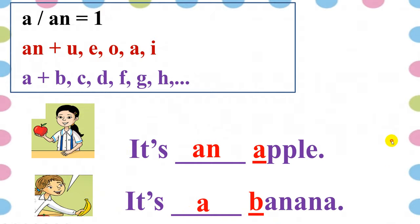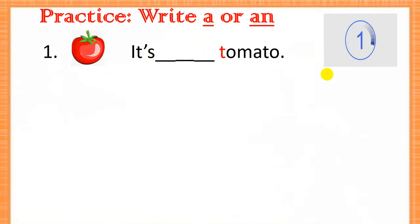Now, let's practice. Write. It's a, or, an, tomato. It's a, or, an, tomato. You have 5 seconds. What's your answer?